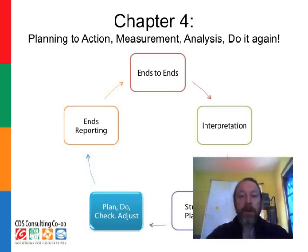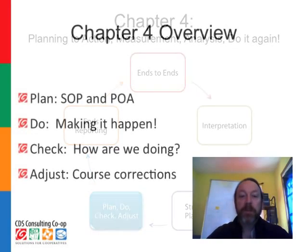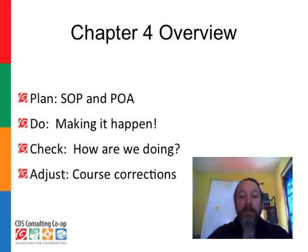Chapter 4 fits into the entire process. Once the ends have gone through interpretation and strategic planning, we finally get to Plan, Do, Check, Adjust. Here's an overview: first, I'm going to talk about the plans and planning themselves and differentiate between standard operating procedures and plans of action. Then we go on to Do and talk about making it happen — this is the fun stuff, the activities that go on every single day. Check: we'll talk about how to check and see how you're doing. And finally, Adjust — talking about course corrections as you move through time.